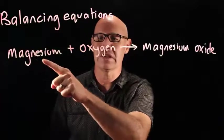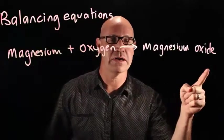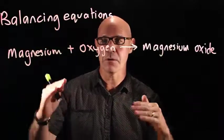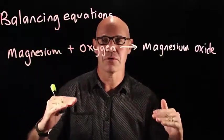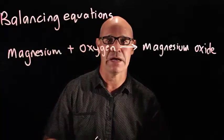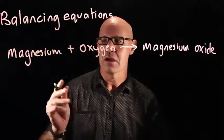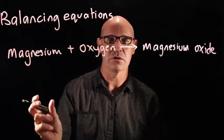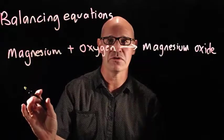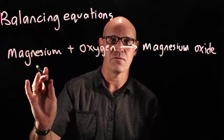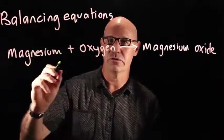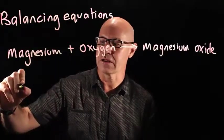So we've seen a word equation so far. Now I'm going to show you how to write that as a chemical equation and then balance it. First of all we need to be able to write the chemical symbols for the atoms and molecules and get that right.